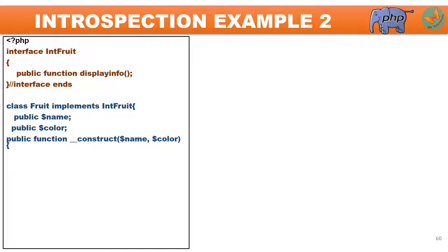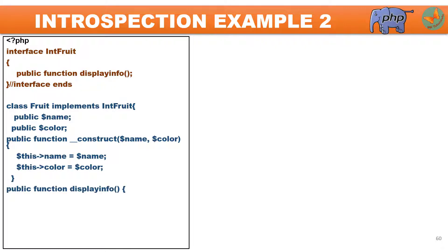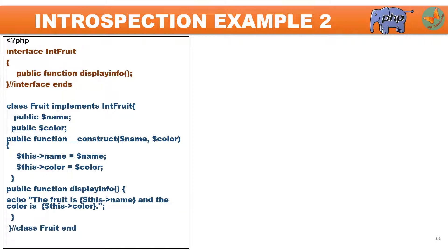In this particular class I will declare two member variables: name and color. To initialize them automatically, I have created one constructor which will take two parameters and initialize these two variables. Next, I have to implement the method declared in the interface, so I'll write the body of display_info, which will print a statement showing the fruit name and its color. I will then create one object variable my_fruit and initialize it using new, passing apple and red, so the constructor will set name to apple and color to red.